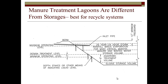When I think about a manure treatment lagoon, when I talk to a producer and look at a plan, I start looking for things. First, I look for an anaerobic treatment volume. It's going to have some manure storage in there, just like a storage, with critical rain and everything else we talked about. There's going to be a sludge storage component as well. This is a breakdown of what the ASAB standard looks at.